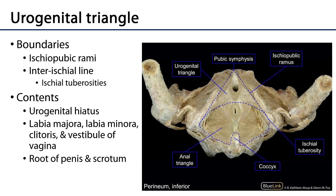Turning attention back to the urogenital triangle, its boundaries are the ischiopubic rami coming together anteriorly at the pubic symphysis, and its posterior boundary is the interischial line. It contains the urogenital hiatus — the space through which the urethra and also the vagina may be conducted. The urogenital triangle is a very complex, three-dimensional arrangement of layers and structures, running from the skin down to the levator ani, including features of the vulva such as the labia majora and minora.